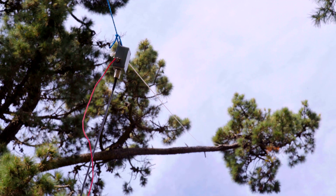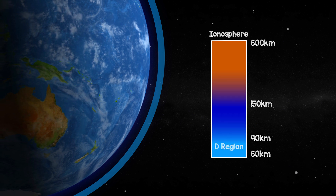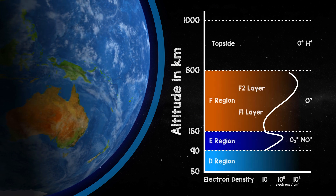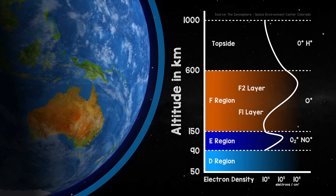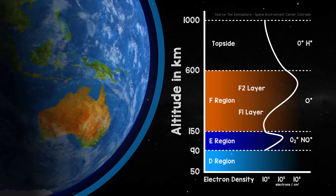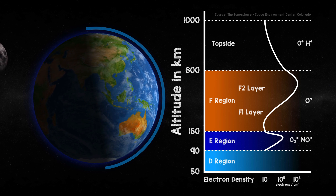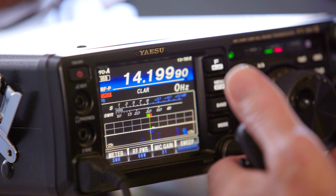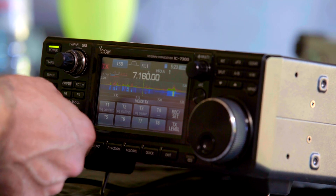The D layer is the lowest region of the ionosphere, situated approximately 60 to 90 kilometres above the Earth's surface. Unlike the higher layers of the ionosphere, the D layer contains a lower density of free electrons, as ionisation primarily occurs due to the absorption of solar X-rays and Lyman Alpha radiation. This layer is most prominent during the daytime, diminishing significantly at night when ionising radiation from the sun is absent. The D layer can absorb high-frequency radio waves, leading to signal attenuation and degradation of radio communication, particularly for frequencies below 10 MHz.